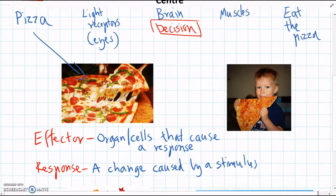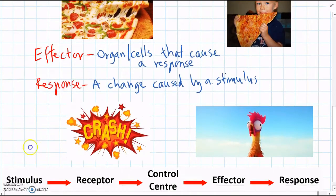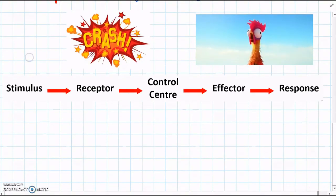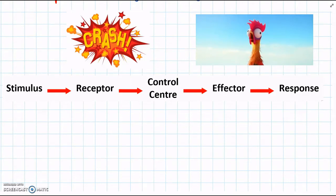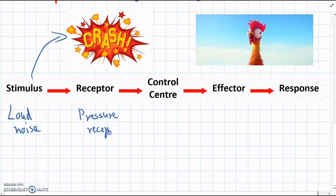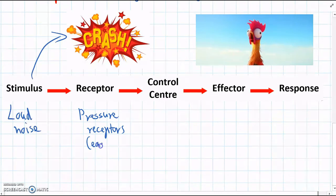Let's look at the stimulus response model for a different situation. This is a common one. If you hear a loud crash or a loud noise, if you hear a huge crash, your pressure receptors in your ear are going to detect that sound.